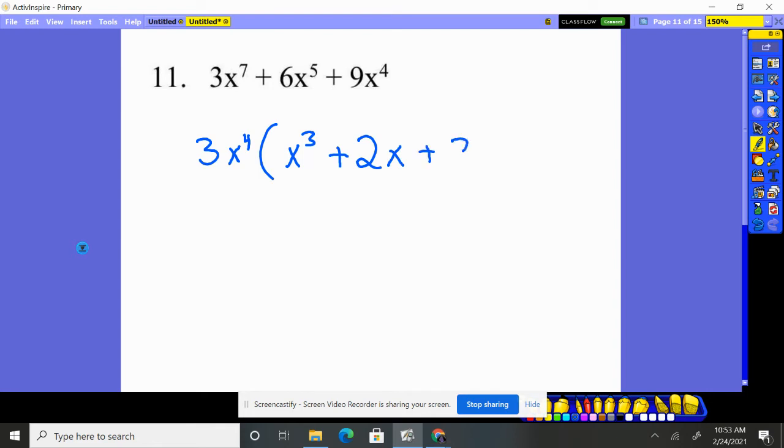For nine, we know a three is going to be here because three times three will give us the nine. We factored all the X's out, so there's no X's there. So there's our answer for 11.